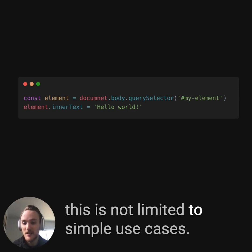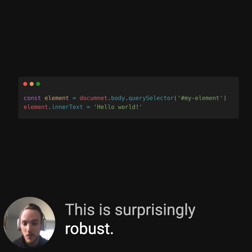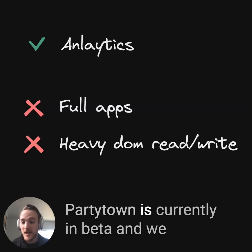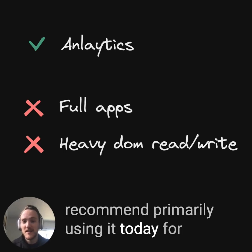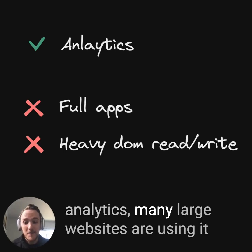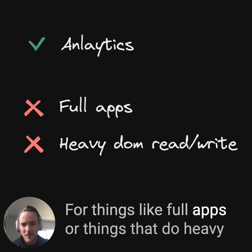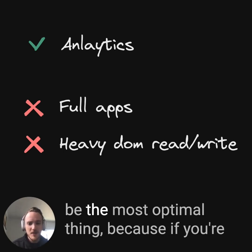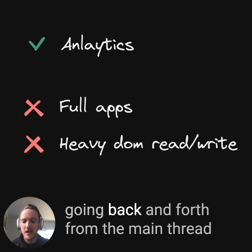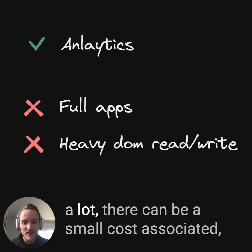This means it's not limited to simple use cases — it's surprisingly robust. PartyTown is currently in beta, and we recommend primarily using it today for analytics. Many large websites are using it in production for this use case very happily. For things like full apps or things that do heavy DOM reads and writes, PartyTown may not be the most optimal thing, because if you're going back and forth from the main thread a lot, there can be a small cost associated.